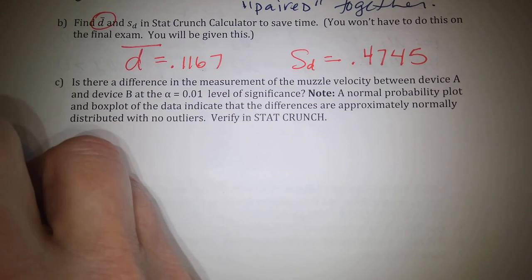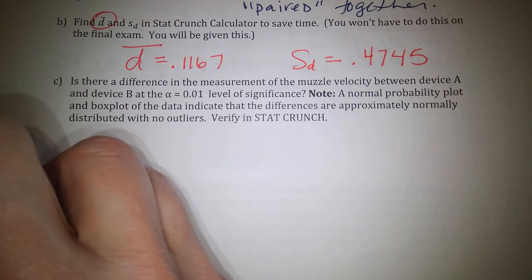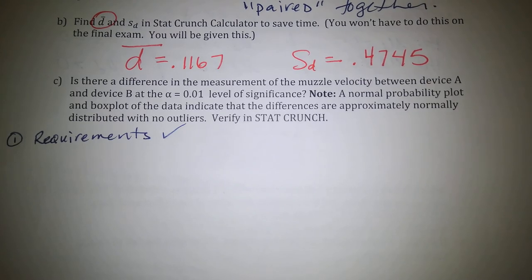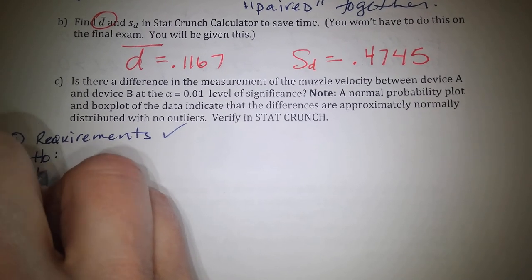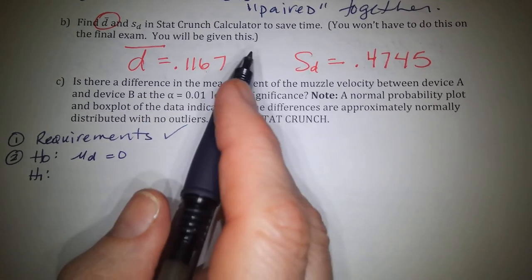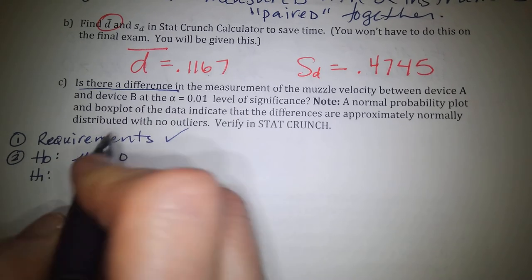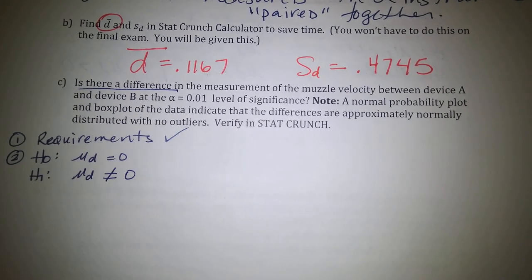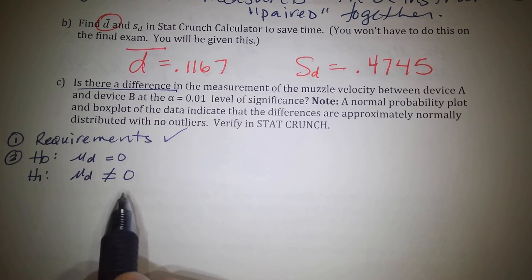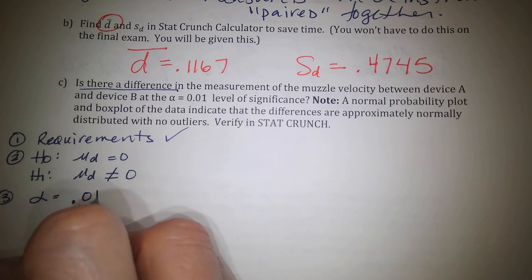Step one: assume the requirements have all been met. Step two: the null hypothesis is that the average difference is 0. The problem asks whether there is a difference — not stating greater than or less than — so the alternate is simply not equal to 0, making this a two-tailed test. Step three: the level of significance is 0.01, so this will be a very tight test.